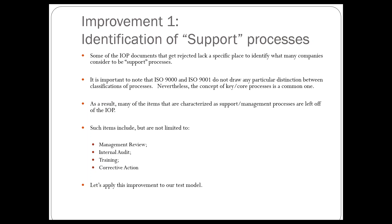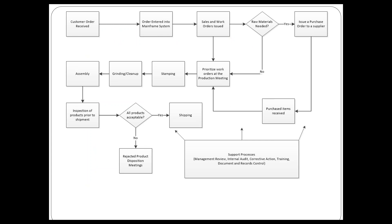So let's apply this first improvement. You'll note that now in the lower right-hand corner, we have the support processes block. This is a disconnected block — the intent is that these support processes provide support to the rest of the quality management system, kind of equally to all other processes.